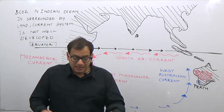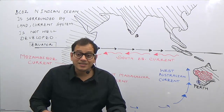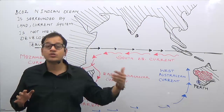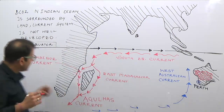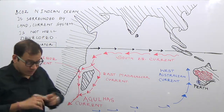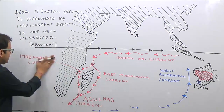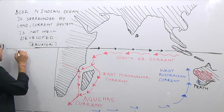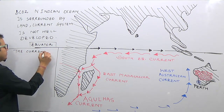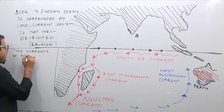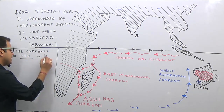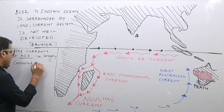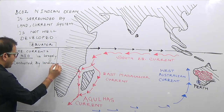Now look at the currents of the northern Indian Ocean. Remember, the current system of the Indian Ocean is largely controlled by landmass and by winds. Nowhere else is the effect of winds so dominant as in the northern Indian Ocean. So the currents of the North Indian Ocean are largely controlled by landmass and monsoon winds.